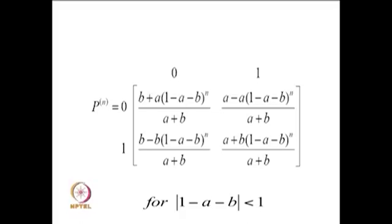The n-step transition probability matrix is given here. Starting from p you find p squared, p cubed by induction to get p to the power n. This is valid provided |1-a-b| < 1, because we are computing the p^n matrix, and unless this absolute value condition holds, the result is not valid.